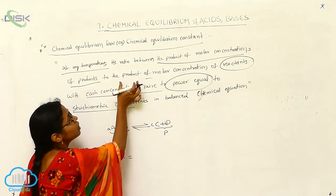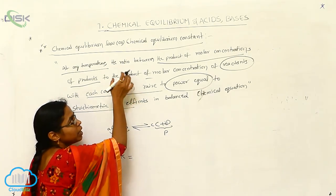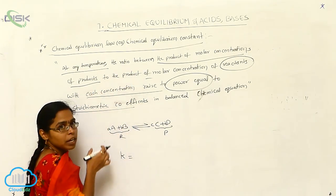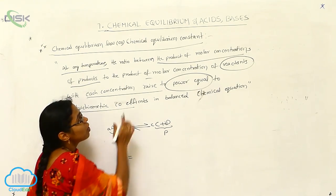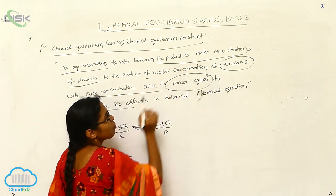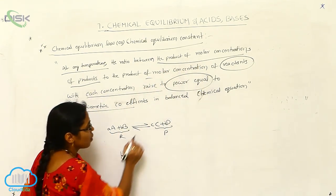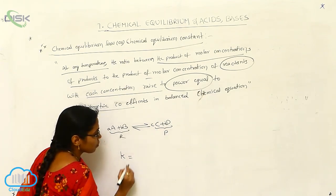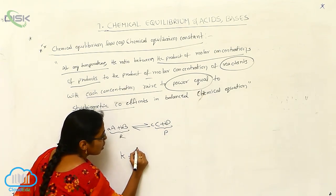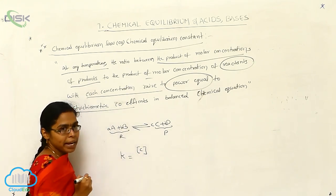Now I want to write the chemical equilibrium constant depending upon the definition. The product of molar concentration of products — here the products are these. Concentrations are always explained by the square bracket notation.